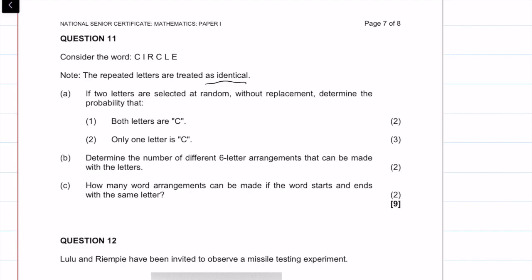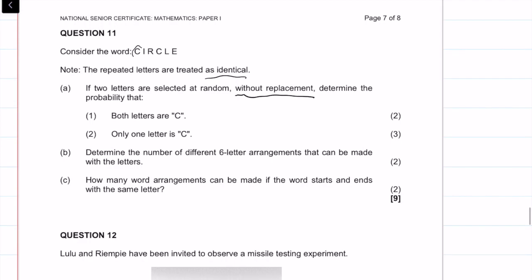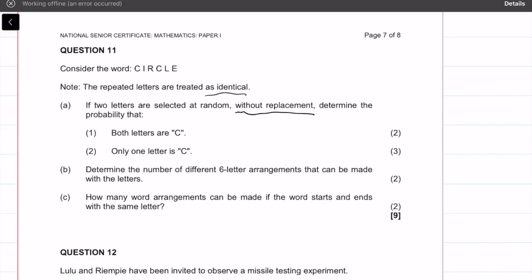The repeated letters are treated as identical. If two letters are selected at random without replacement, determine the probability. So basically what we need to consider is, consider this like you have marbles with these letters in them and they're in a bag and you're just picking out a letter at a time and you're not repeating them.